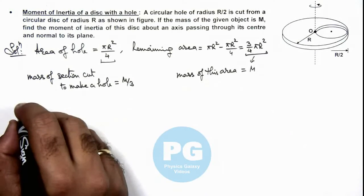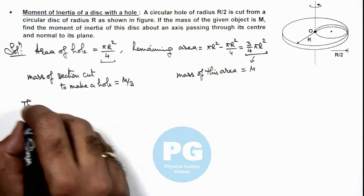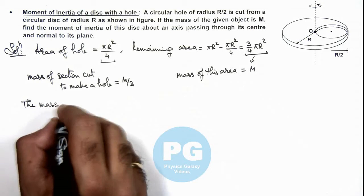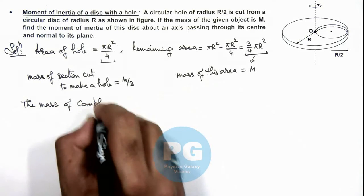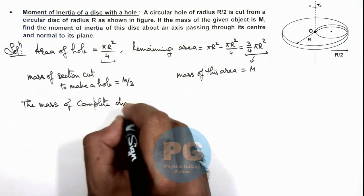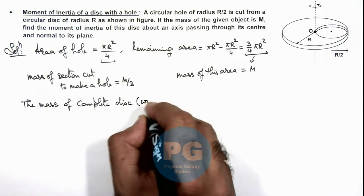So we can write the mass of complete disc, that means without a hole, can be written as: